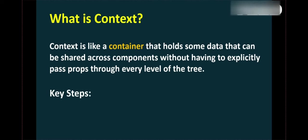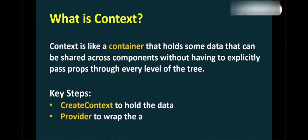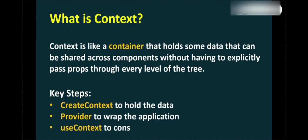The key steps involved to manage state with the Context API are: first, create a context to hold the data; second, create a provider component to wrap the application; and third, use the useContext hook to consume the context.